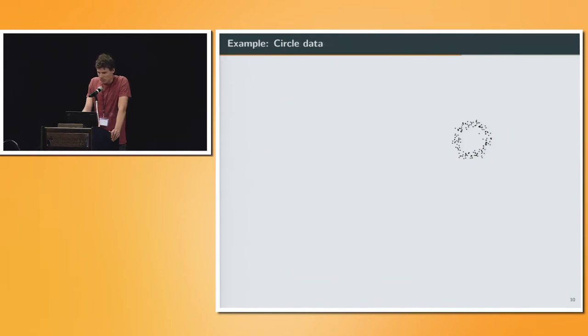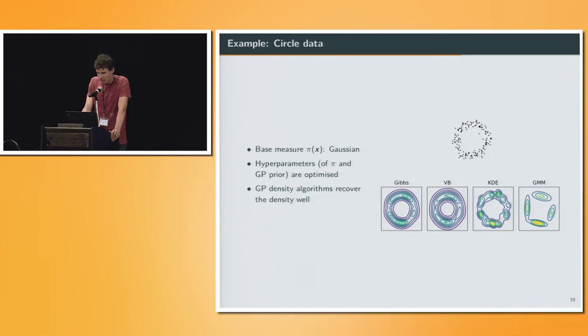Here is the data I showed before. Basically, it's not the generative model anymore. It's points uniformly distributed over a circle plus some Gaussian noise, and we want to see if our algorithms can infer the density. We chose as base measure a Gaussian in the two-dimensional plane, but now hyperparameters of this Gaussian and of the GP prior, the kernel hyperparameters, are optimized. We compare to two other algorithms, the kernel density estimator and the Gaussian mixture model, and we see that the GP density algorithms recover the density quite well, like this circle with the Gaussian noise, while especially the Gaussian mixture model has problems in recovering the circular structure. Just showing that we have a very flexible model class here.